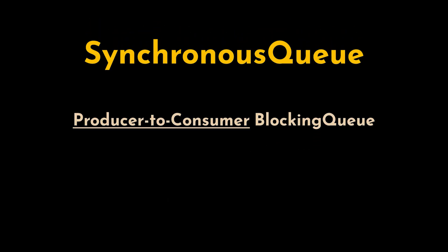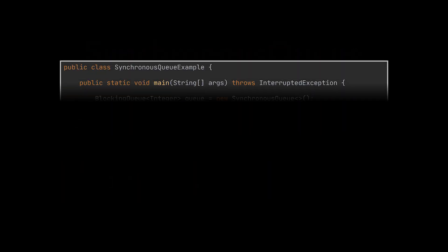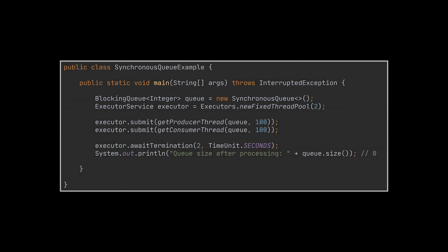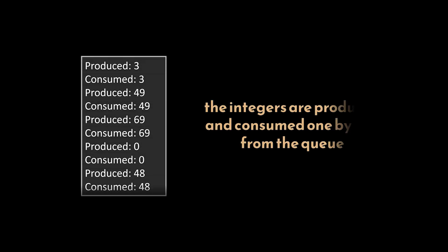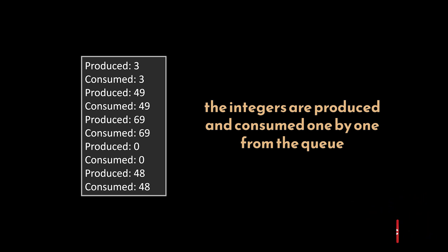Finally, the SynchronousQueue is a special kind of blocking queue where each put operation must wait for a corresponding take operation by another thread, and vice versa. It has no capacity — it simply passes elements directly from the producer to the consumer. In this example, the producer thread adds an element to the SynchronousQueue but cannot proceed until the consumer thread takes the element. Checking the output, we can see that integers are produced and consumed one by one, making it ideal for handoff scenarios between threads.